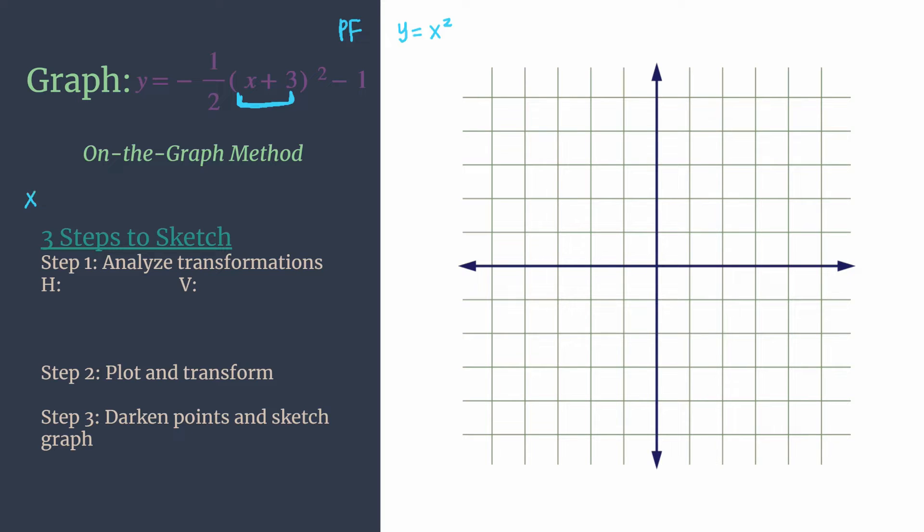And all that means is we just need to think about it as if we were solving an equation, something like x plus three equals zero. What would you do to solve this? You would subtract three. And that's actually what we'll do for our transformation too. We're subtracting three from our x's or moving our graph three units to the left. So let's go ahead and make a note of that. We'll just move our graph left three or subtract three from our x's.